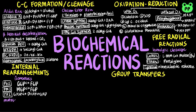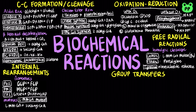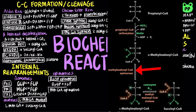A mutase catalyzes the movement of a functional group from one position to another within the same molecule. The previously mentioned L-methylmalonyl-CoA mutase converts L-methylmalonyl-CoA to succinyl-CoA, which are structural isomers of each other. Epimerases are enzymes that catalyze the inversion of stereochemistry in molecules. Examples include ribulose-5-phosphate epimerase, which converts ribulose-5-phosphate to xylulose-5-phosphate during the pentose phosphate pathway, as well as methylmalonyl-CoA epimerase, which interconverts L and D methylmalonyl-CoA.